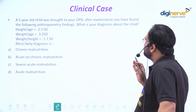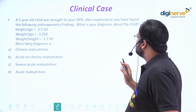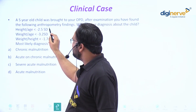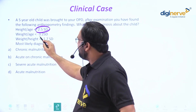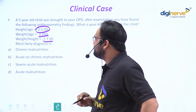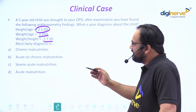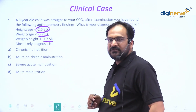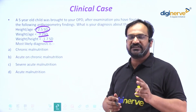The findings are: height-for-age is minus 2.5 SD, weight-for-age is minus 3.2 SD, and weight-for-height is minus 1.7 SD. What will be your most likely diagnosis? They have given options: chronic, acute, and chronic severe acute, and acute malnutrition. To solve this type of question, you must remember two things.